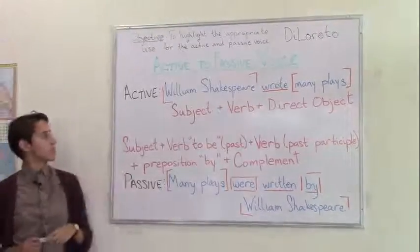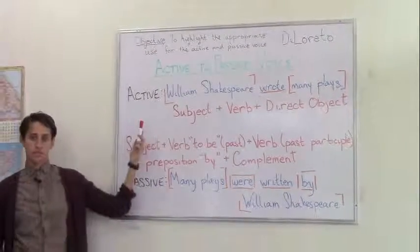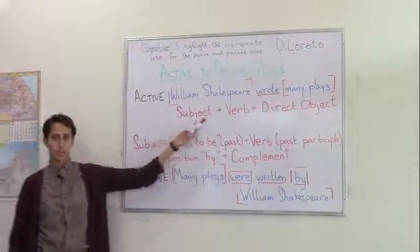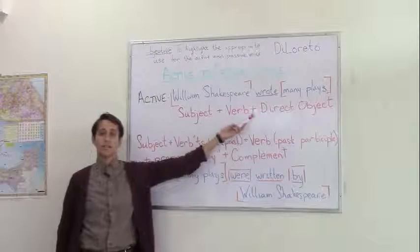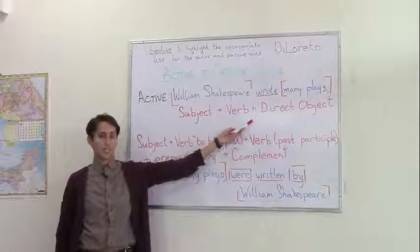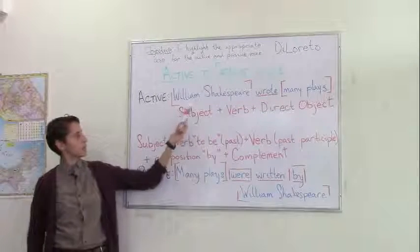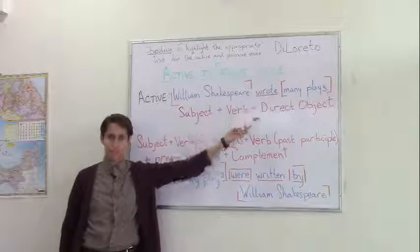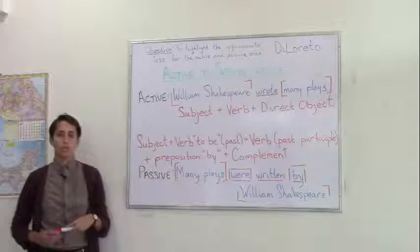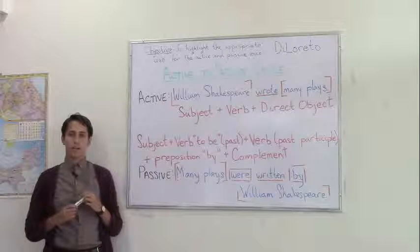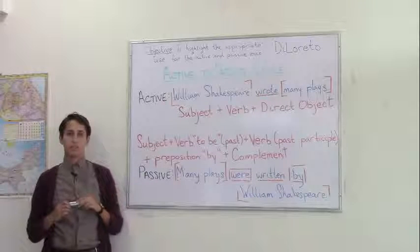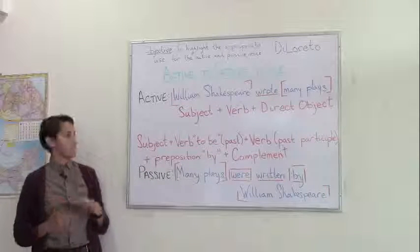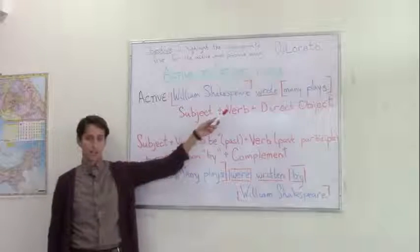When we use the active voice, the form is subject plus verb plus the direct object. In the example, William Shakespeare wrote many plays. We use the active voice when the one performing the action is more important than the act itself.